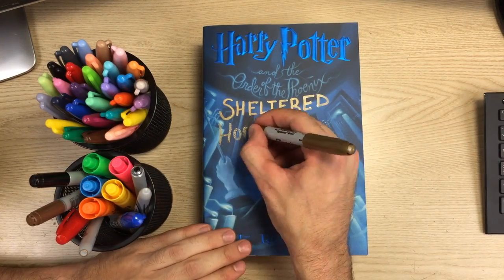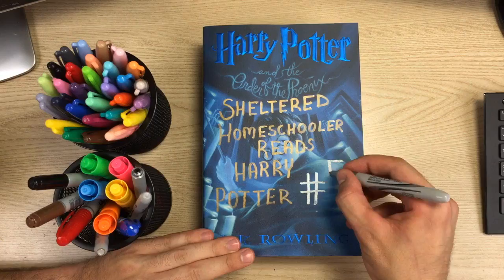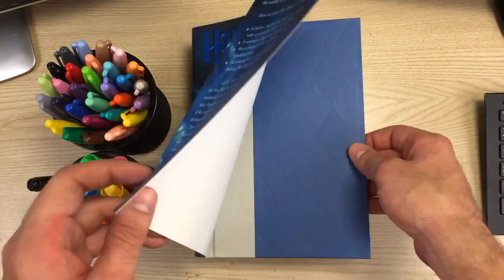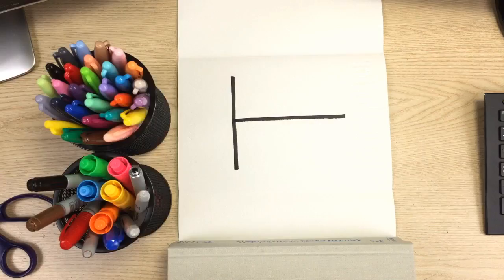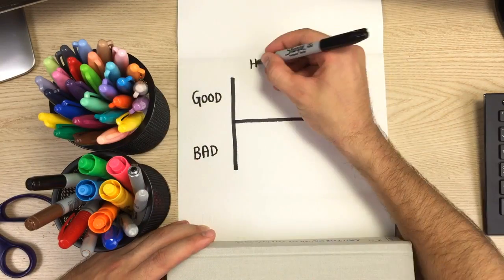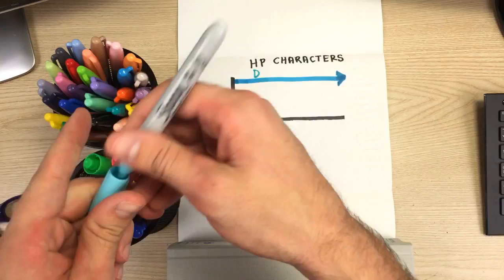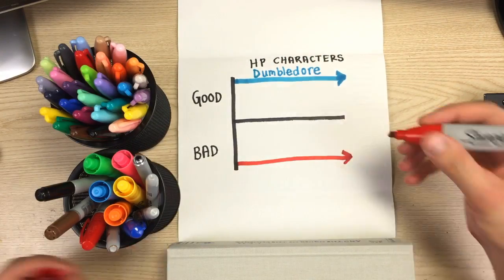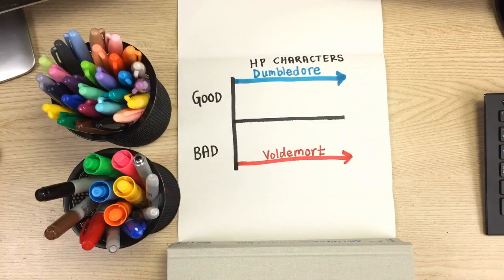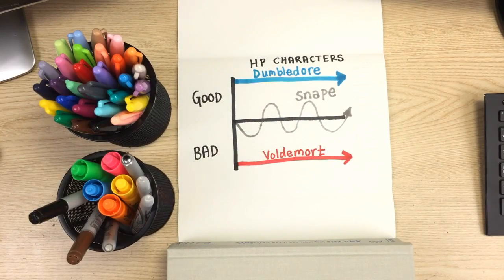Welcome to Sheltered Homeschooler Reads Harry Potter number 5, which comes to you in the form of a math nerd style graphs and charts video. The most basic and often simplistic way of evaluating characters in a story is whether they are good or whether they are bad. Voldemort obviously is always bad and Dumbledore is basically always good, but this is why I think Snape is such a fascinating character — he's always oscillating on that x-axis between good and bad.